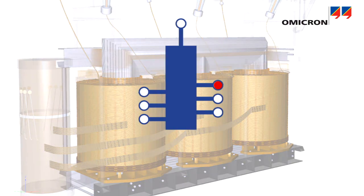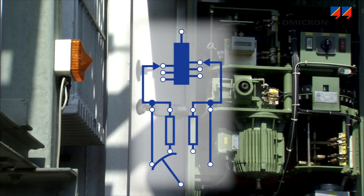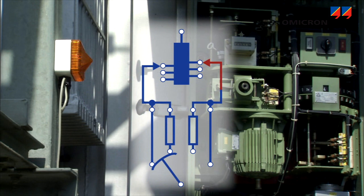For tapped windings, winding resistance measurement is usually performed for each tap position. Besides giving information about the condition of the winding, this measurement is also used to check the condition of the tap changer, which is connected in series to the main winding.